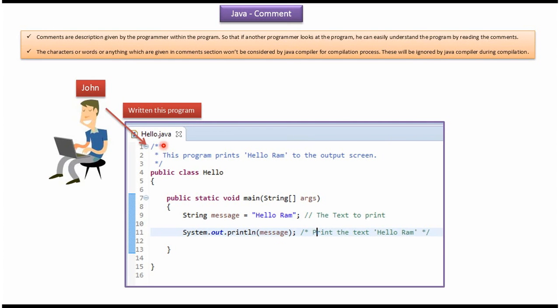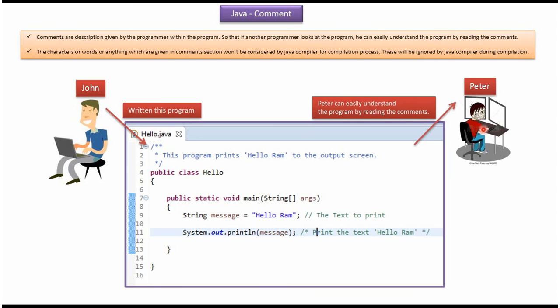Here you can see hello.java. This program was written by John, and he has added several comments — like 'this program prints Hello World to the output screen', 'the text to print', and 'print the text Hello World'. Suppose Peter wants to understand this program; he can easily understand it by reading the comments.